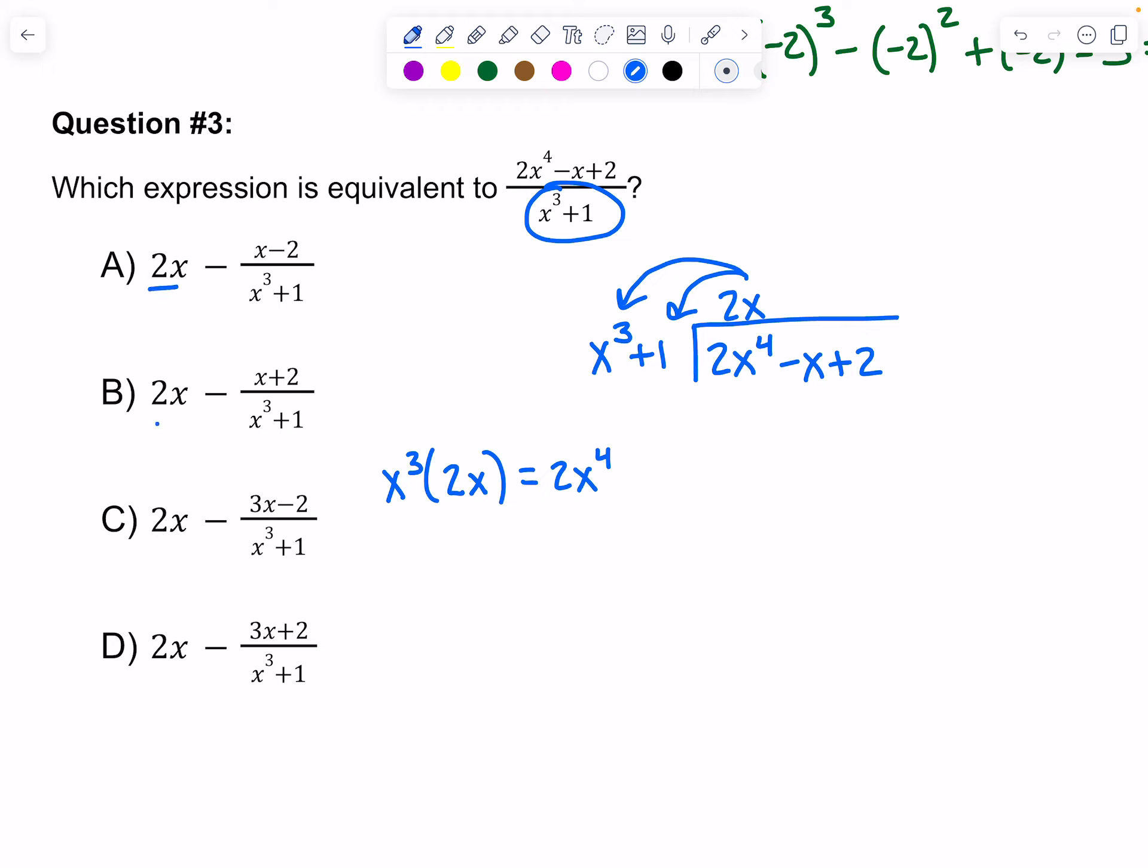You can tell that has to be right because that's the first term in all of the answers. So I have 2x to the 4th, and I have 2x times 1, which goes with the next term. Then change my signs, cancel the first term out, and add up what's left. I have negative 3x plus 2.